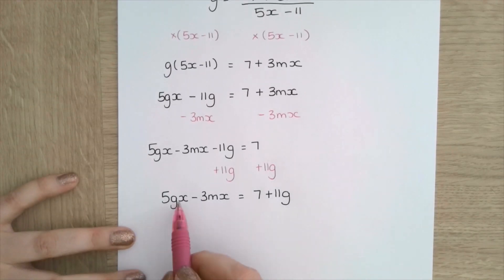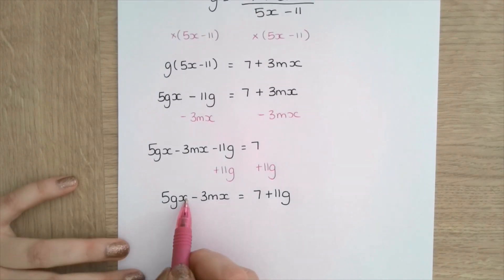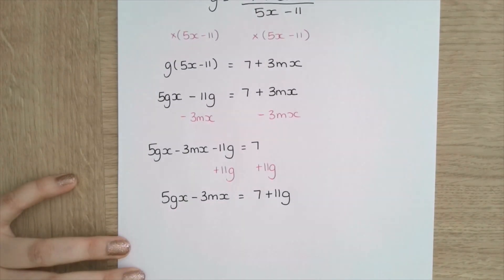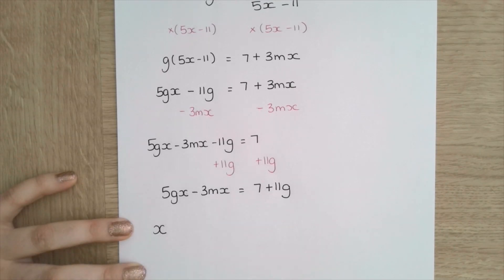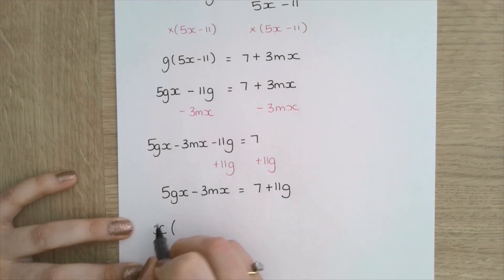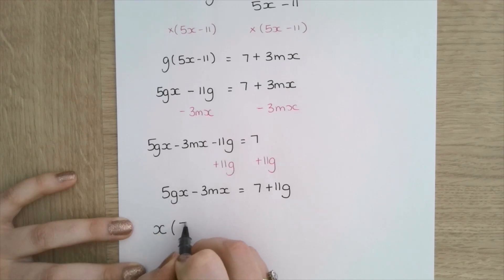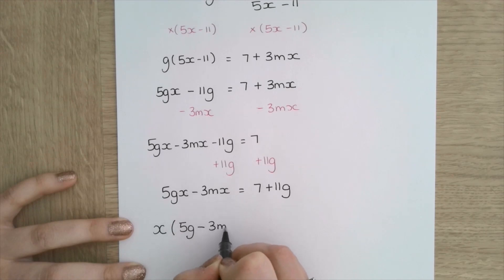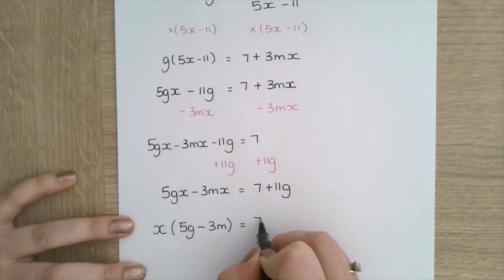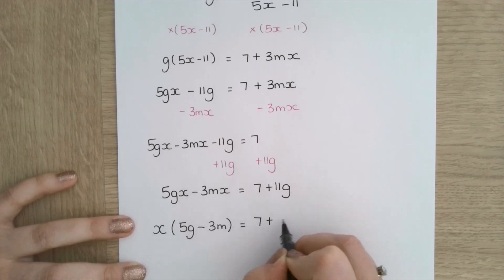Again, I've got x's in both of these terms, so I'm going to factorize out the x because I want to make x the subject. So when I factorize x out here I get 5g; when I factorize the x out of the second term I get minus 3m. So x brackets 5g minus 3m equals 7 plus 11g.